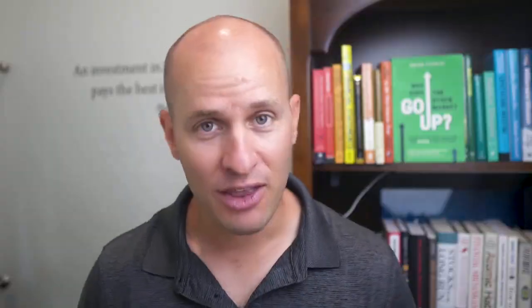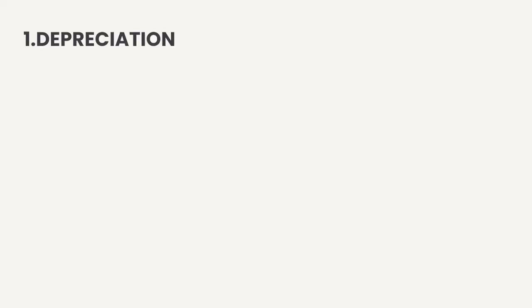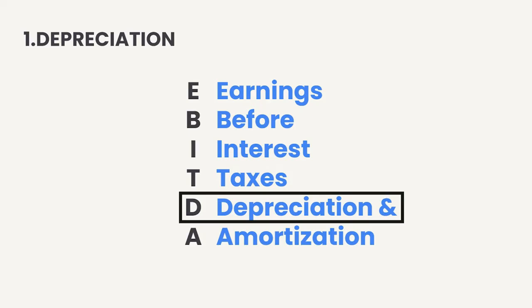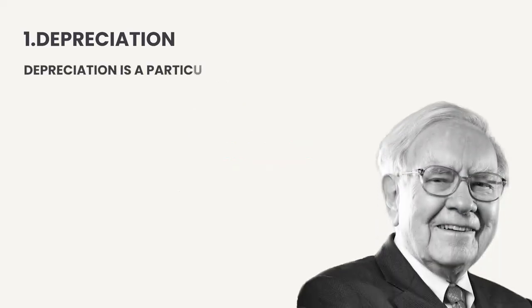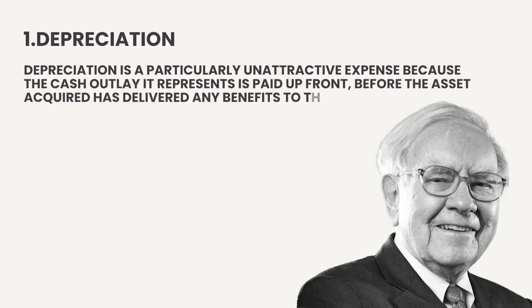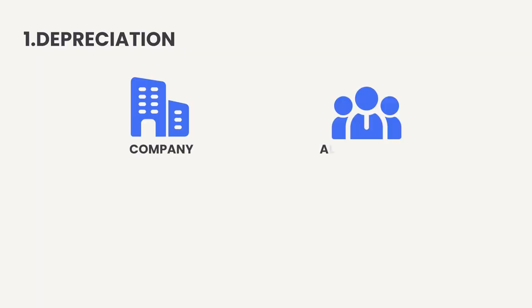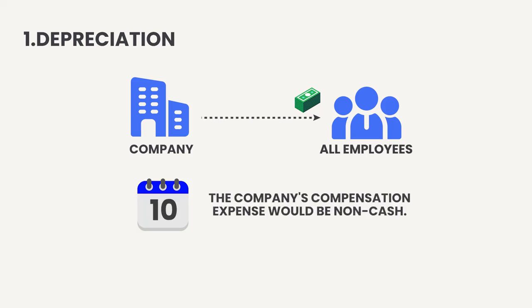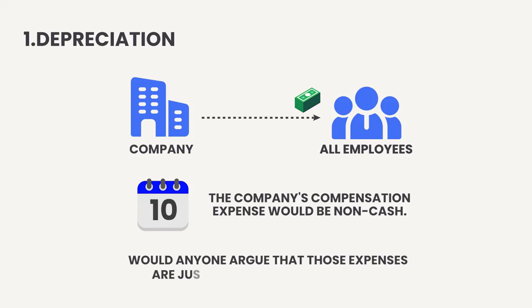So if EBITDA is so great, why do people like Charlie Munger and Warren Buffett hate it? There are three big reasons. Reason number one involves depreciation. Warren Buffett said that depreciation is a particularly unattractive expense because the cash outlay it represents is paid up front before the asset has delivered any value to the business — so it is complete nonsense to pretend it is not an expense. Buffett's parable: if a company paid all employees' salaries for the next 10 years up front, those compensation expenses in years two through ten would be non-cash — but would anyone argue they're just a bookkeeping formality? Pretending depreciation isn't an expense is just as silly.